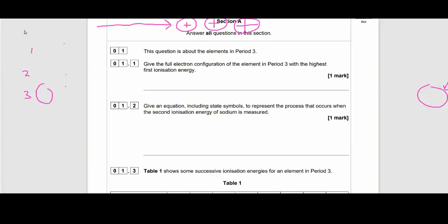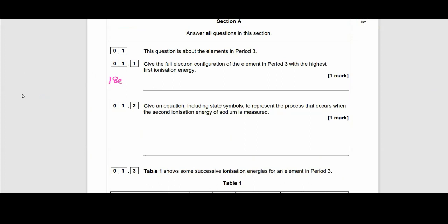Argon is going to be the hardest to remove an electron from — it has 18 electrons, so let's write out that configuration. It has the highest ionization energy because it's a noble gas and has a full outer shell. As you can see here, it's got 3p6 — that's the full electronic configuration: 1s2 2s2 2p6 3s2 3p6.